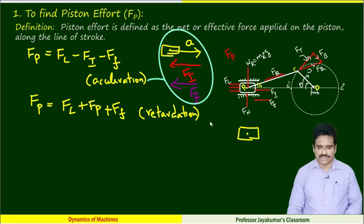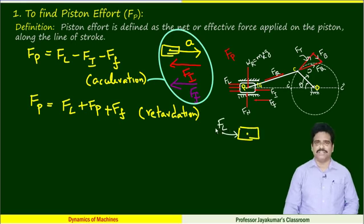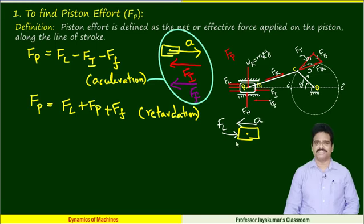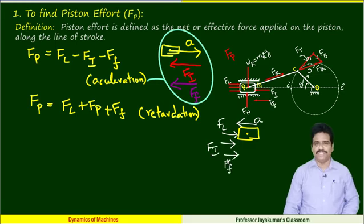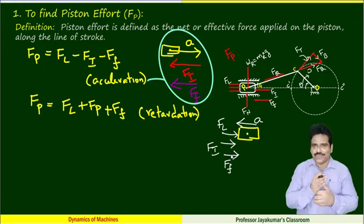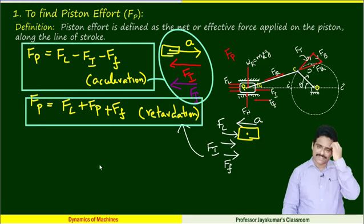During retardation: this is the piston; FL will be acting here; this is the direction of acceleration; inertia force also acts in this direction; frictional force also will be opposing — that means all three forces are acting towards the same direction. This is the equation for retardation.